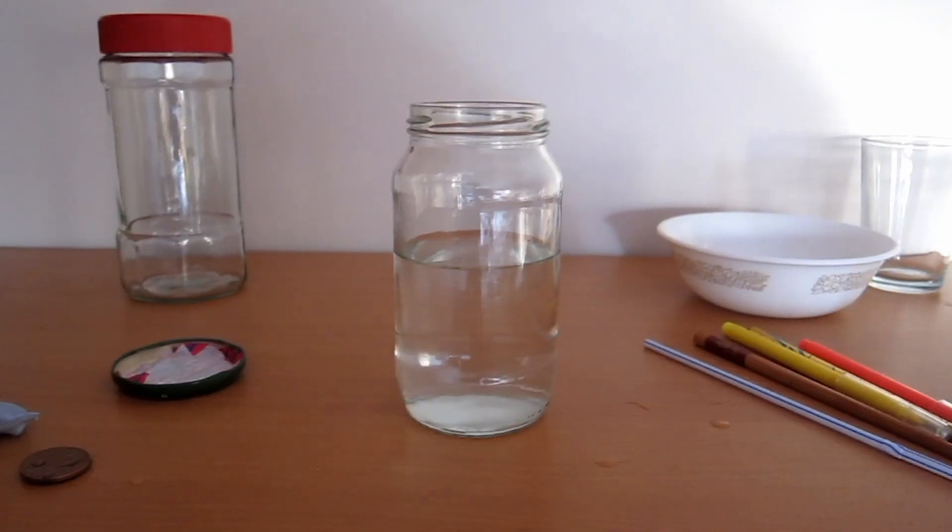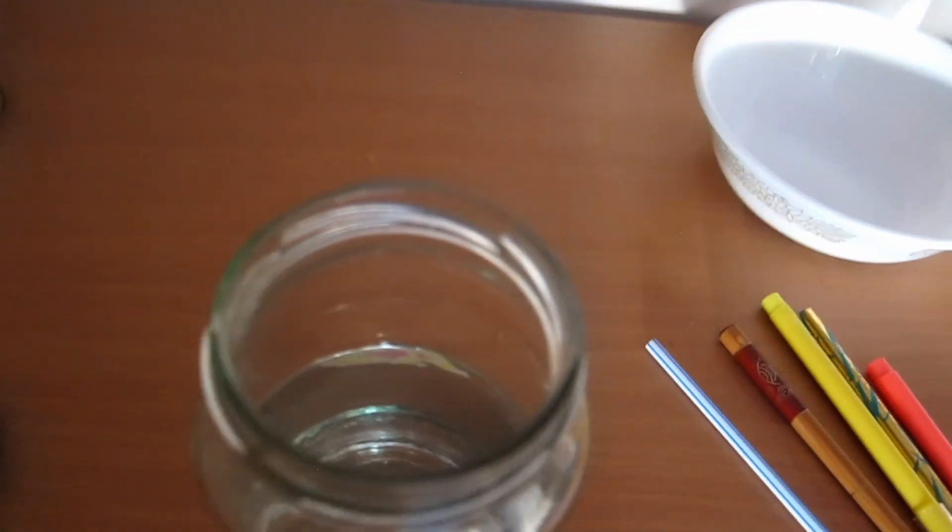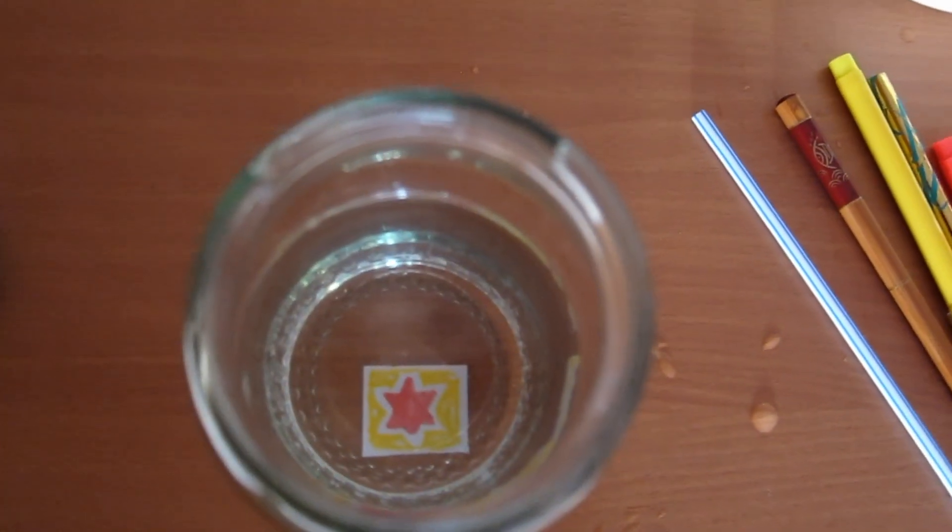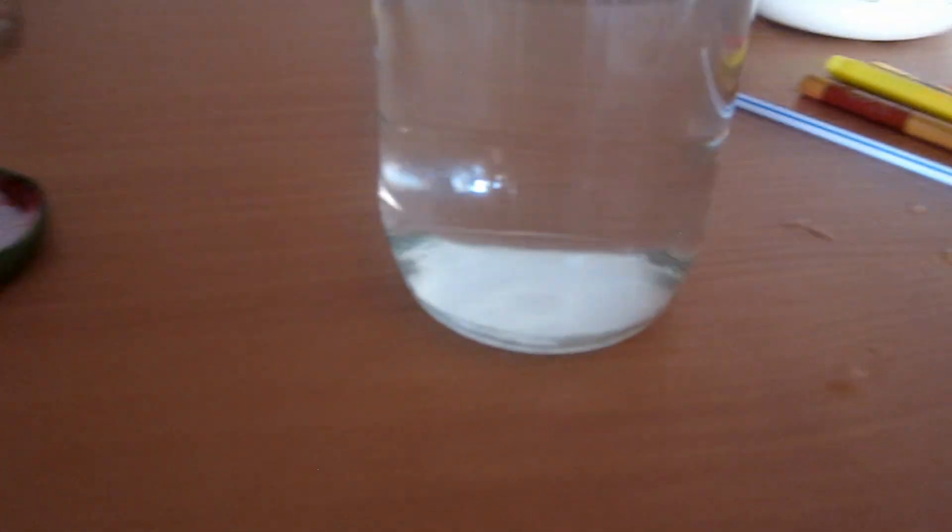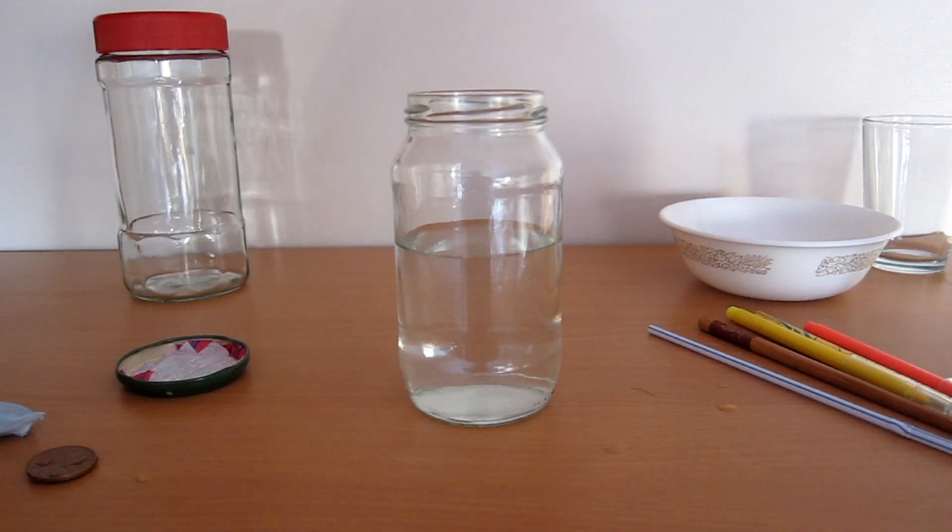Take the lid off and you can see the stamp clearly from above, but what about the side? Can you see it? Try these experiments at home and have fun!